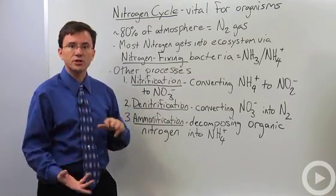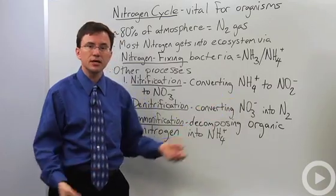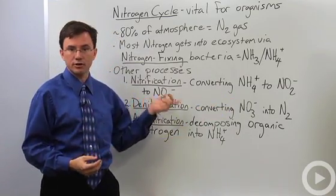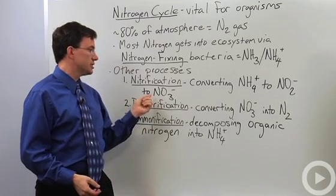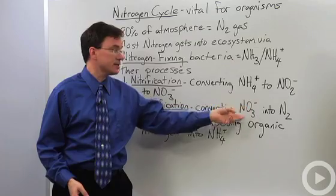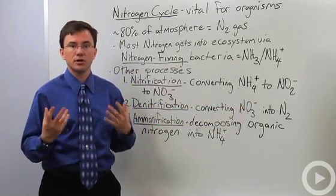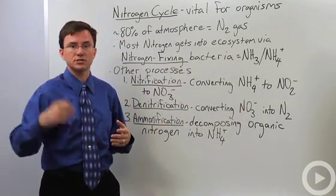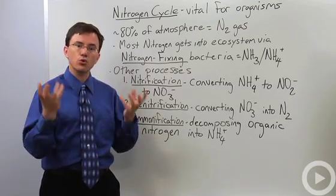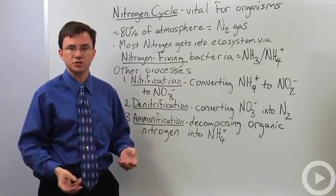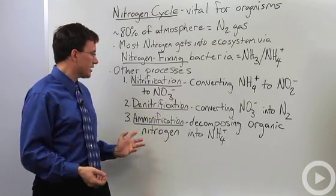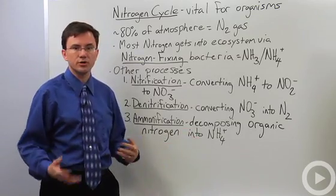One is called nitrification which is converting the ammonium into nitrites and then ultimately into nitrates NO3 minus. Denitrification is the reverse of this essentially. It's converting that NO3 minus into ultimately a nitrogen gas which is returned ultimately to the atmosphere. Ammonification takes organic forms of nitrogen for example in amino acids or proteins and it converts that organic nitrogen into ammonium.